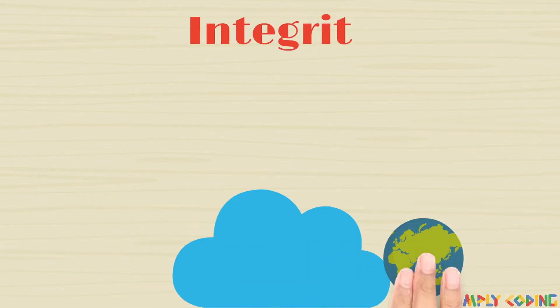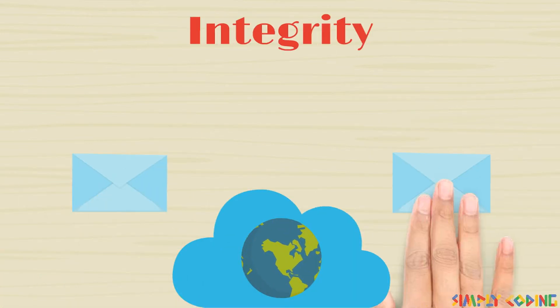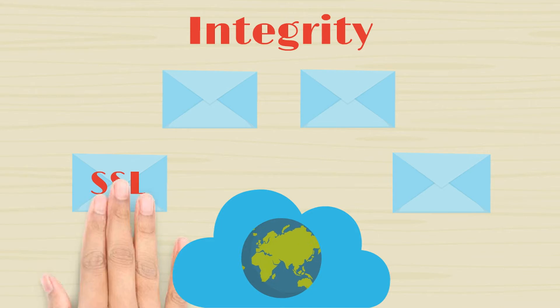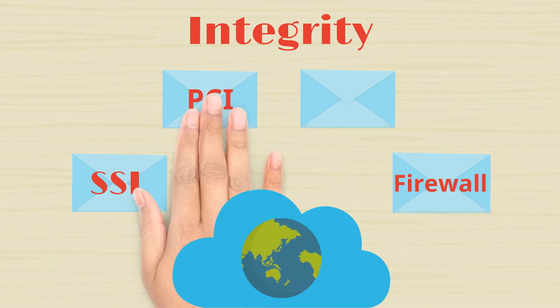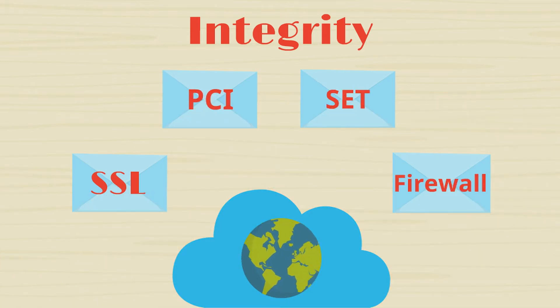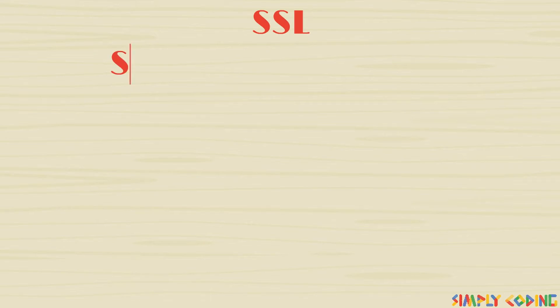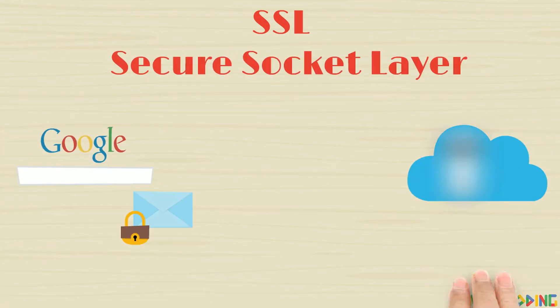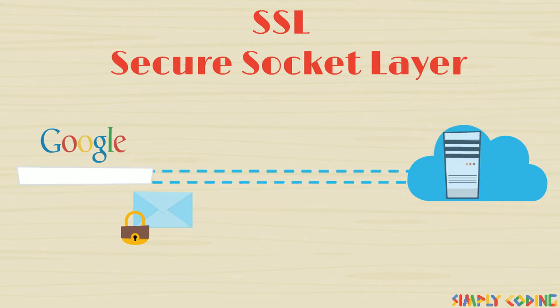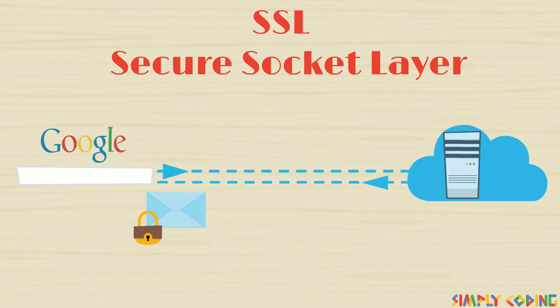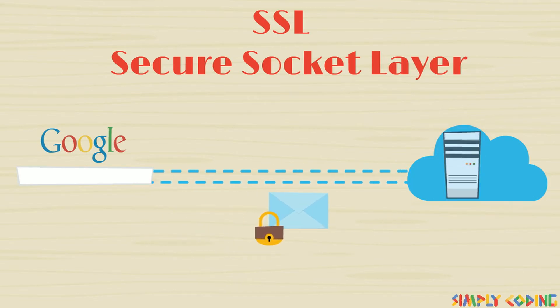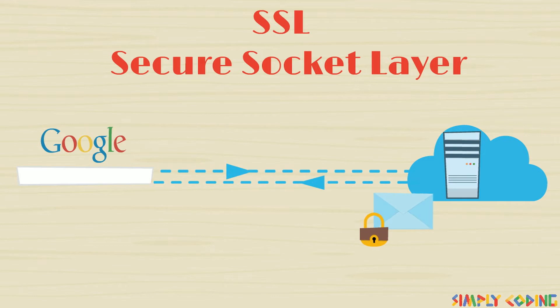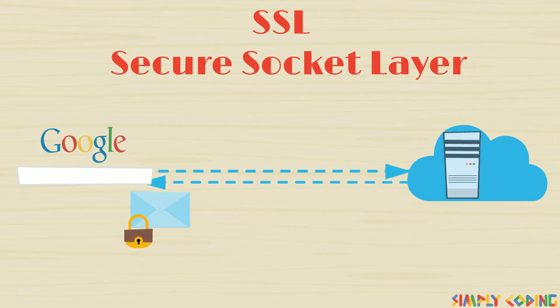Next is integrity. How do you maintain integrity of data transferred over the net? There are various protocols which are standardized to maintain integrity. Let us cover them one by one. First is SSL — Secure Sockets Layer — which is a standard security protocol to establish an encrypted link between the web server and a browser. This is to ensure the data transmitted between the browser and the website is encrypted.